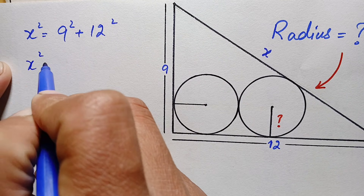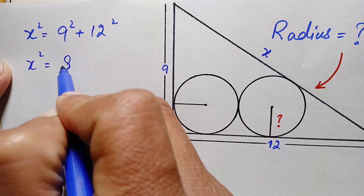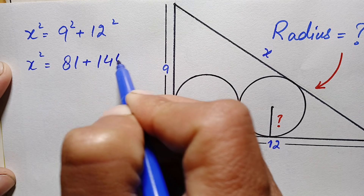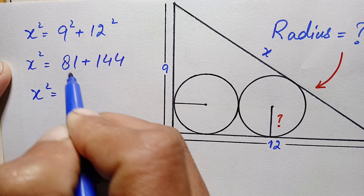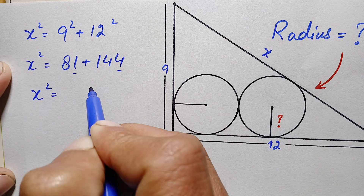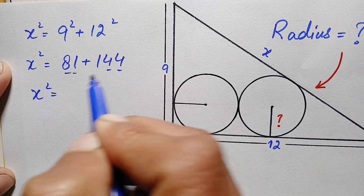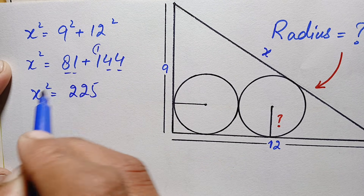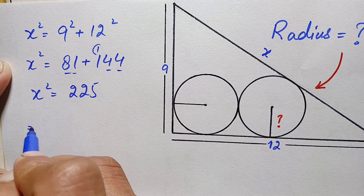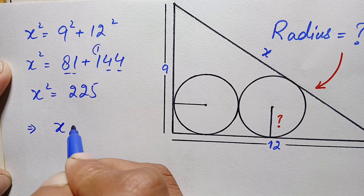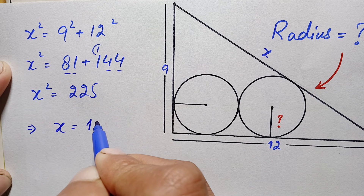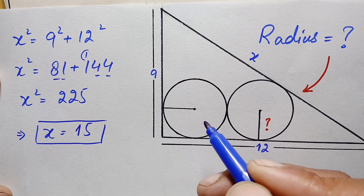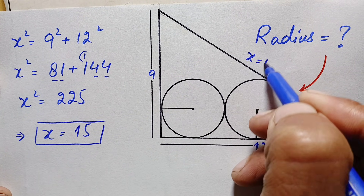Simplifying: x squared equals 9 squared plus 12 squared, which is 81 plus 144, giving us 225. Taking the square root on both sides, x equals 15. So the third side of this right angle triangle is 15 units.